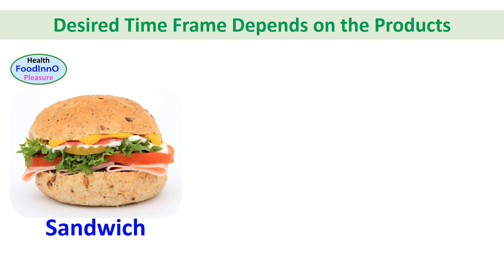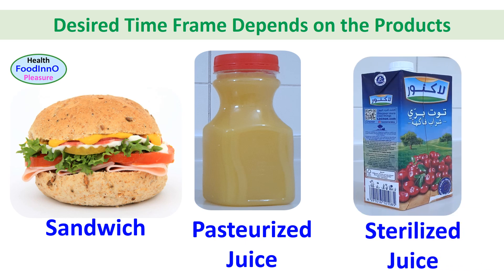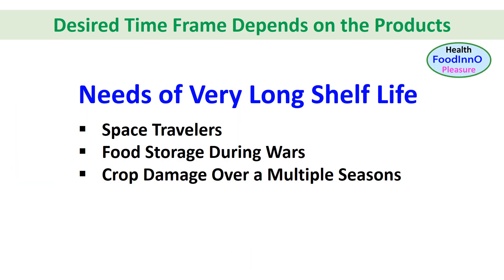For fruit juice, we need to apply the preservation method based on the required shelf life. If we need a couple of weeks of preservation, we could apply pasteurization and store it in chilled conditions. Whereas if we need a very long shelf life of six months to one year or more, we need to use UHT or sterilization methods. In some instances, we need to preserve foods for a very long time — even three to five years — for example, foods for space travelers, food storage during wars, or when crops are damaged over multiple seasons.